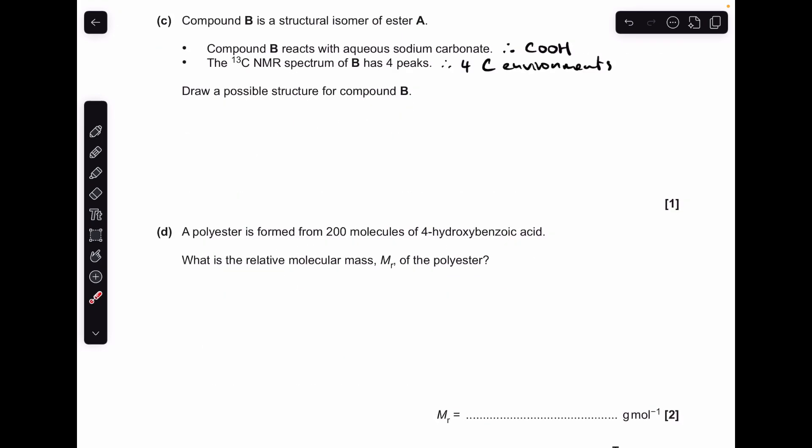Moving on to part C, we're told compound B is a structural isomer of ester A. It reacts with aqueous sodium carbonate, so that means it's got a carboxylic acid group in it, and it has four peaks in its carbon-13 NMR spectrum, so there must be four carbon environments. In terms of structure, you could have any one of these three I've got on the screen now. Just to check, we've got the four environments, one, two, three, four.